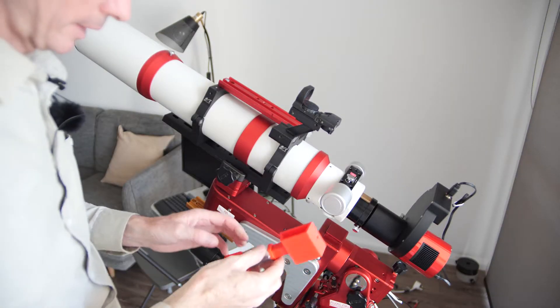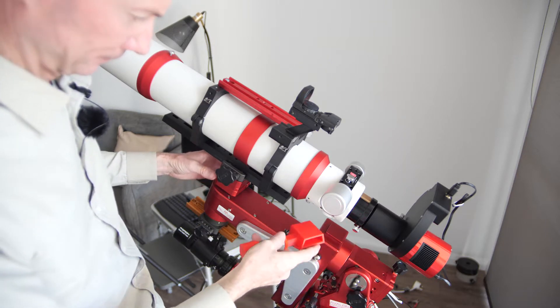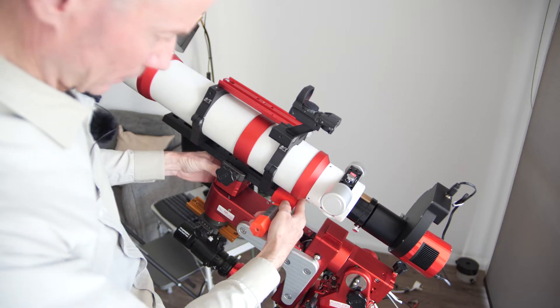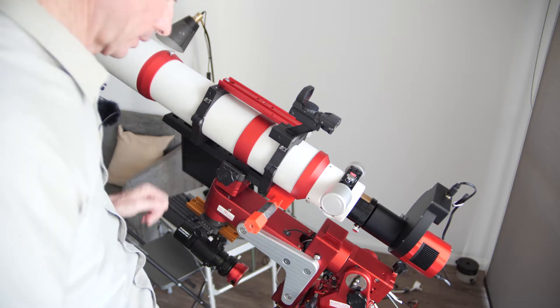This is the 3D printed bracket. I kind of call them outriggers. It just slots onto the dovetail mount.